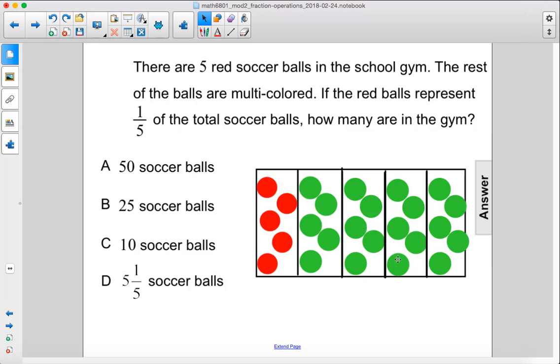So how many soccer balls total? Well, five times five. So there's 25 dots here. So we can write that five divided by one-fifth gives us 25 soccer balls. Alright, so the answer is B.